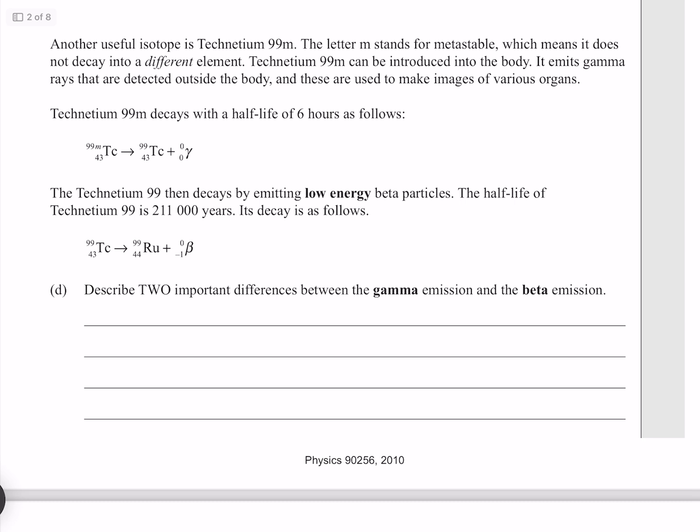Another useful isotope is technetium-99m. The letter M stands for metastable, which means it does not decay into a different element. Technetium-99m can be introduced into the body. It emits gamma rays that are detected outside the body, and these are used to make images of various organs.